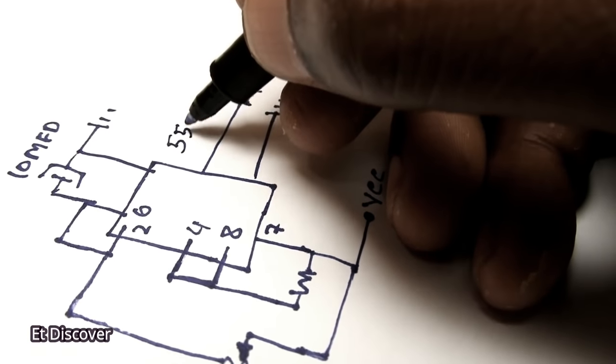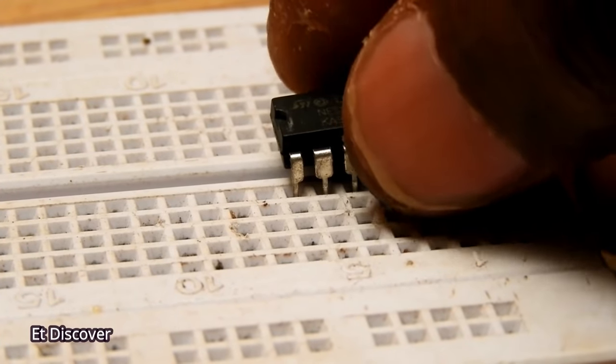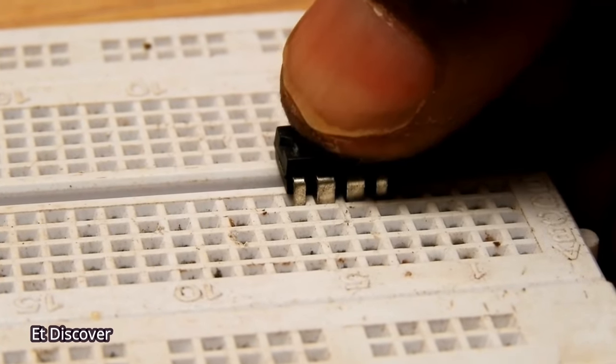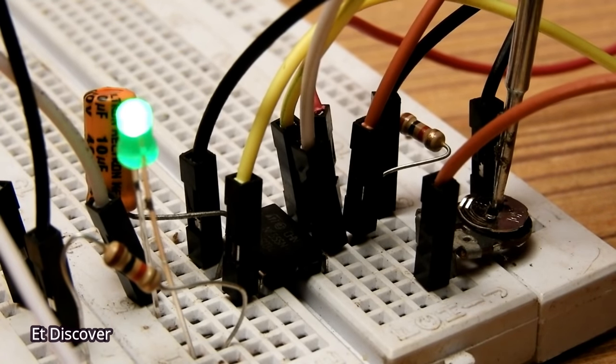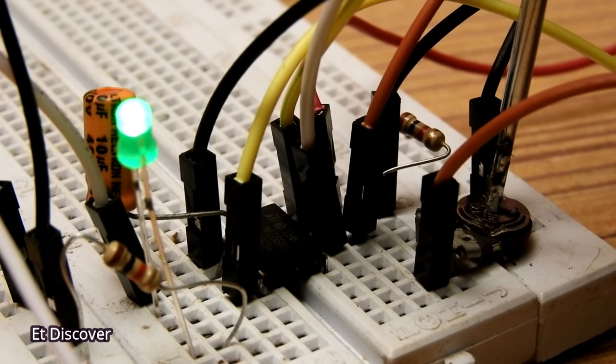For this purpose 555 timer IC is best. So I put the timer IC on the breadboard and on the basis of the diagram I made the circuit. As you can see, when I am rotating the preset, different types of frequencies are coming out.